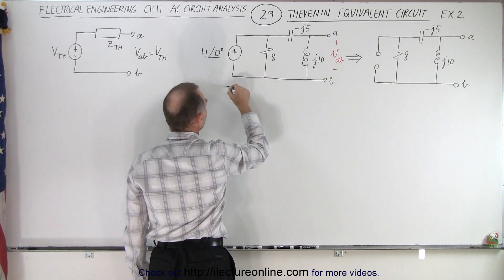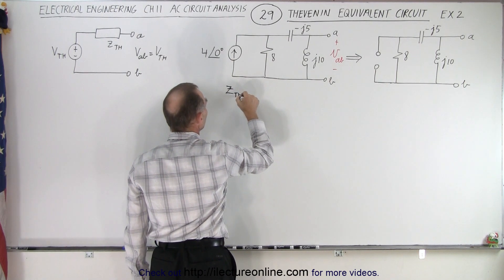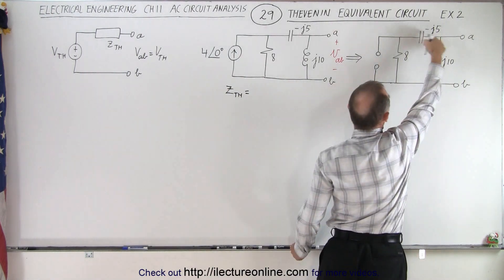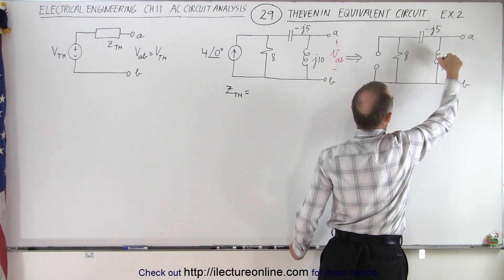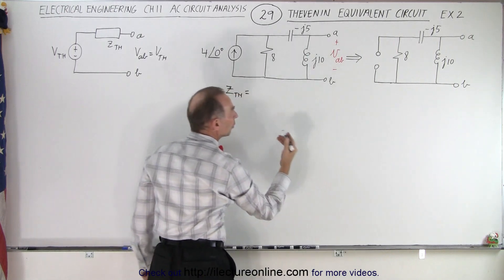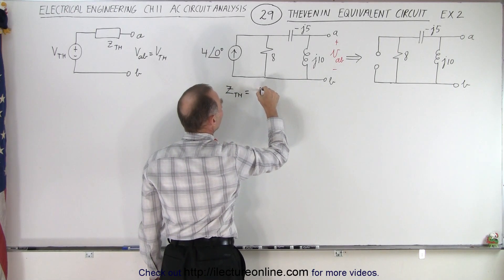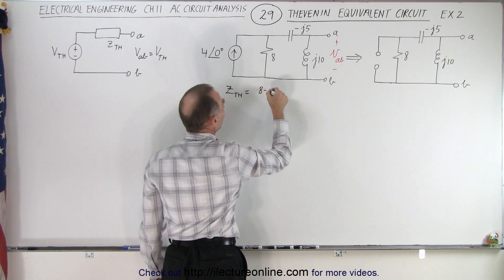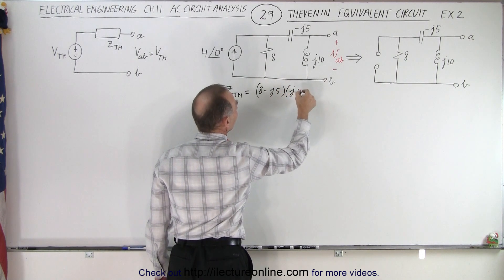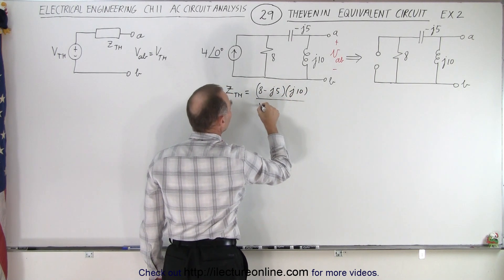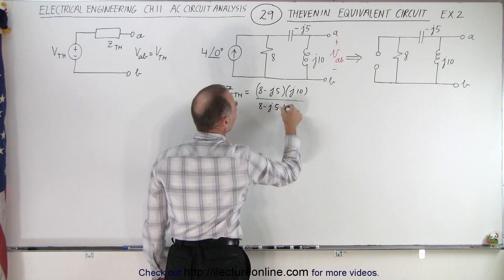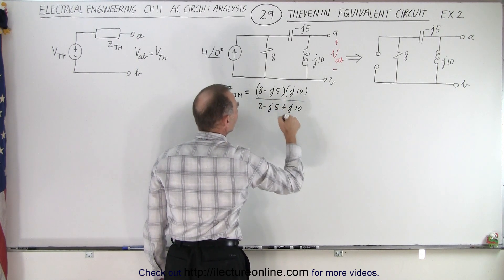So the Thévenin impedance is equal to — notice going from A to B we have a parallel circuit. We have this branch and that branch, so we use the product over the sum. So we have (8 − j5) multiplied by j10, divided by (8 − j5 + j10). It's the product over the sum.